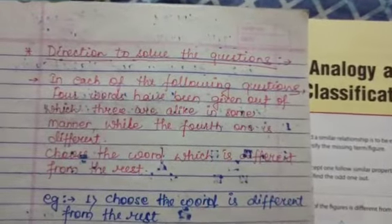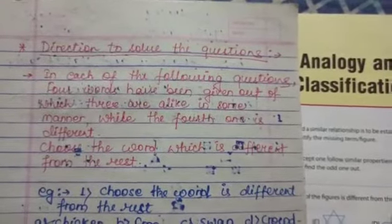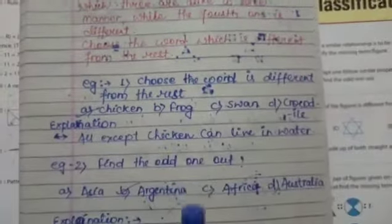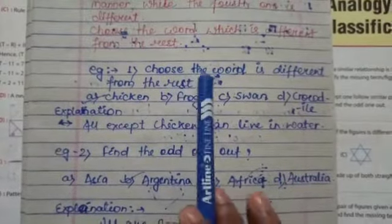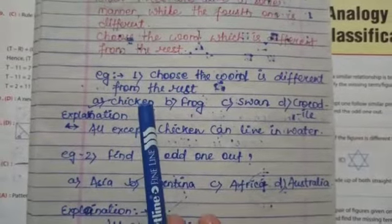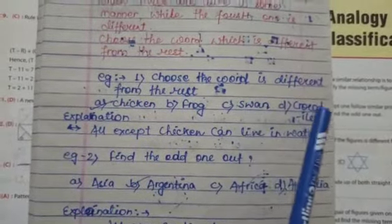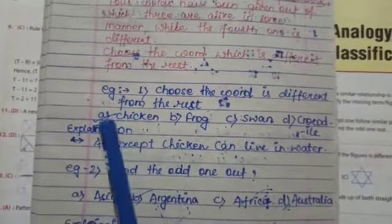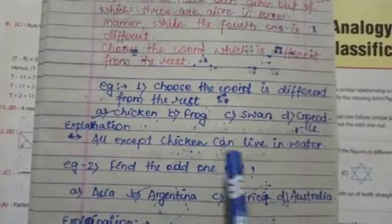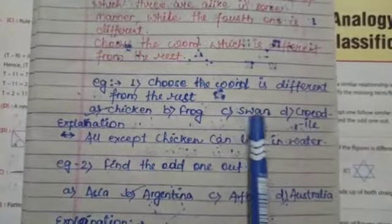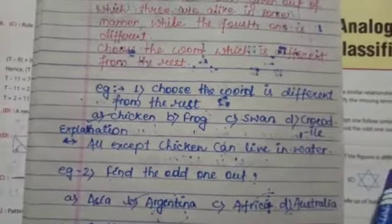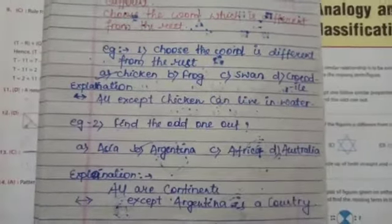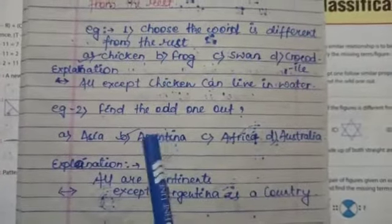Here is an example. Choose the word which is different from the rest. Your answer is chicken. Because all except chicken can live in water. Frog, swan, and crocodile can live in water, but chicken is a land animal.